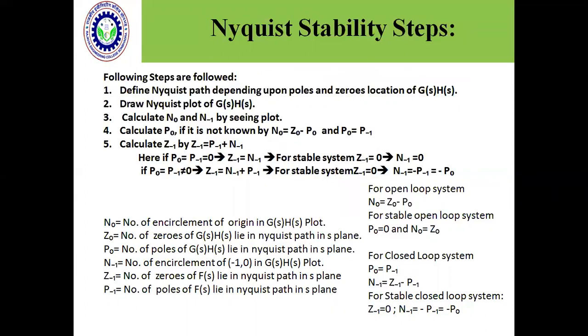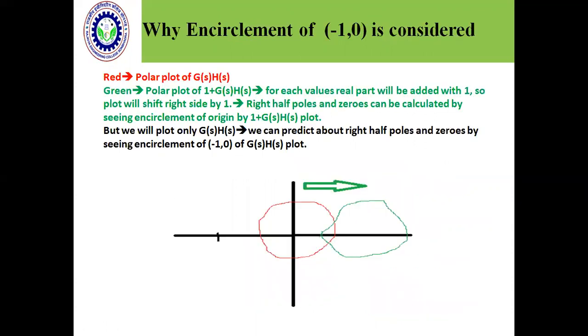So if the entire encirclement of the origin, what will be done? If we believe that this is a polar plot, the polar plot is shown in the red color. It is a polar plot of G(s)H(s). G(s)H(s) means open loop system.